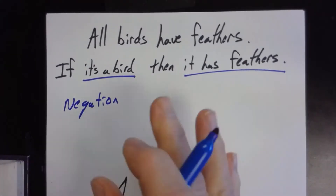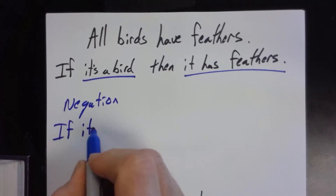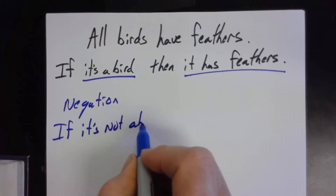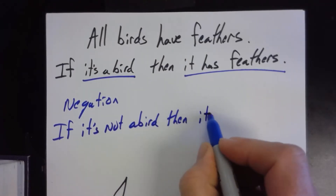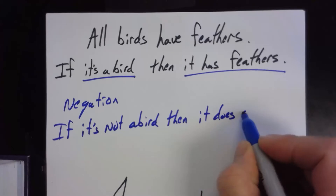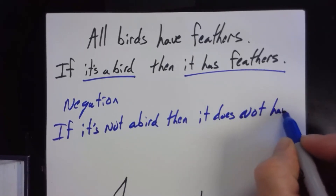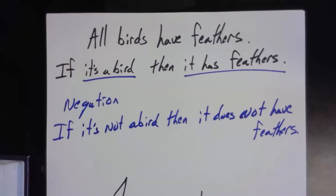I'm going to negate this particular statement: if it's not a bird, then it does not have feathers. That's the negation of that particular sentence — not too bad, is it?